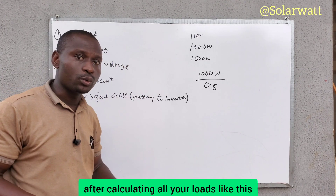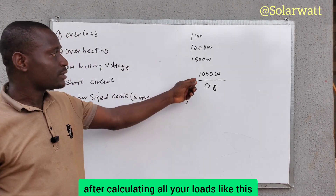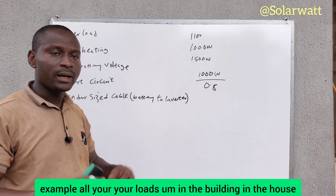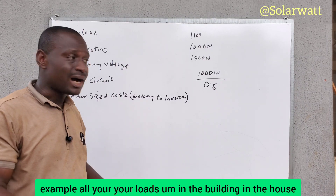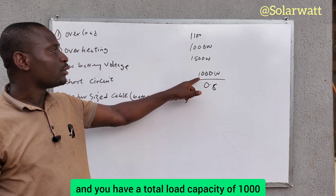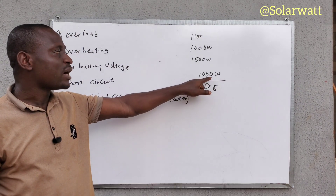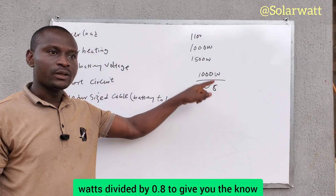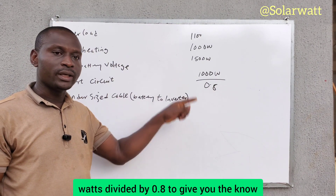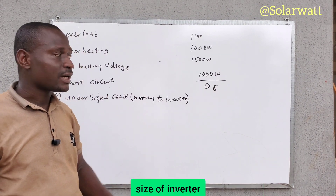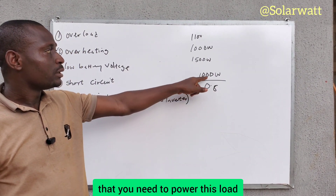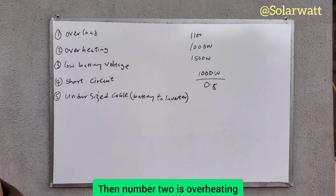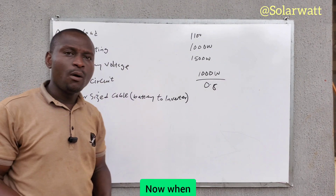After calculating all your loads in the building — for example, a total load of 1000 watts — divide by 0.8 to get the size of inverter you need to power that load. Then, number two is overheating.